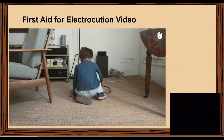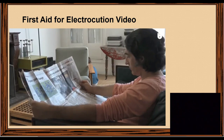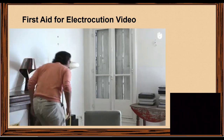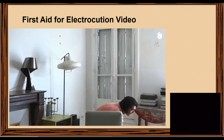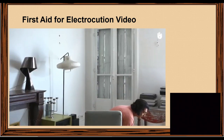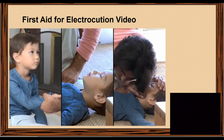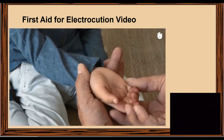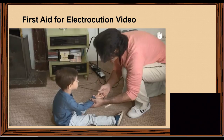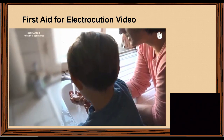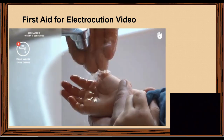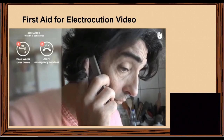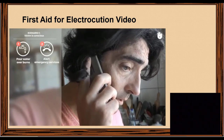Now let's watch the first aid for electrocution video. Before touching the victim, always turn off the source of current either by pulling the plug or by turning off the power switch or circuit breaker. There are three possible scenarios: Scenario one — the victim is conscious. Check their skin for any signs of burns at the entry and exit points of the electrical current. Wet any burns under running water for at least five minutes or until the pain has subsided. Call emergency services in all cases, as the electrical current may have caused internal injuries.